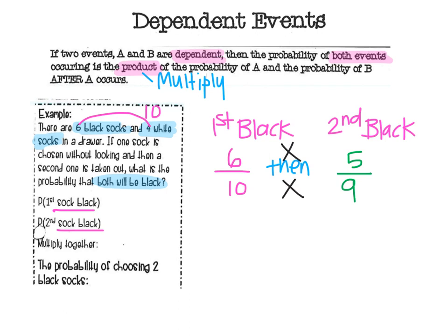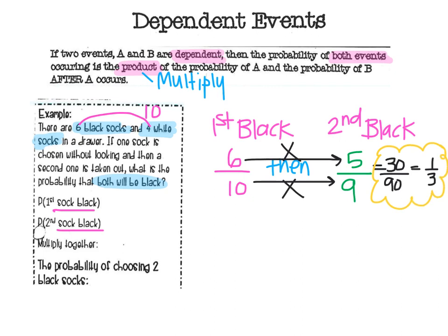Now I multiply across. Six times five is 30, and nine times ten is 90. Or if you simplify that, it makes one third. Either of these answers would work.